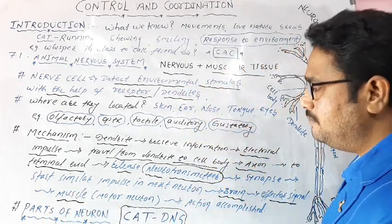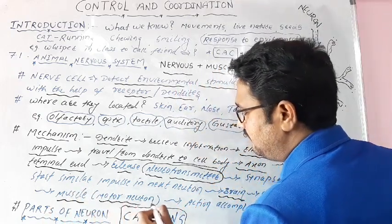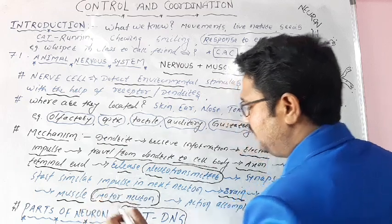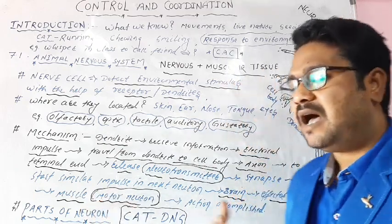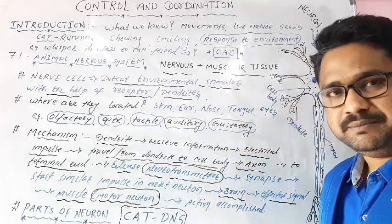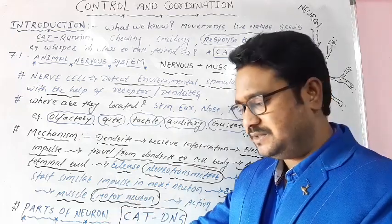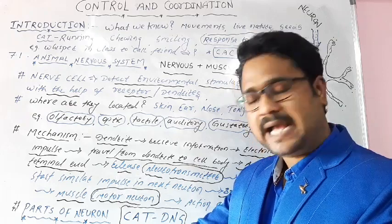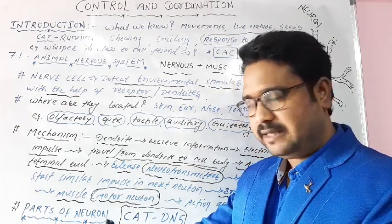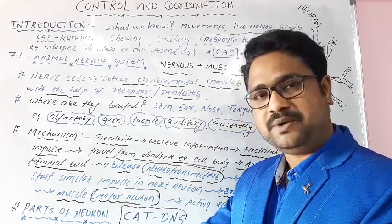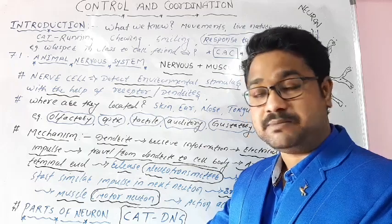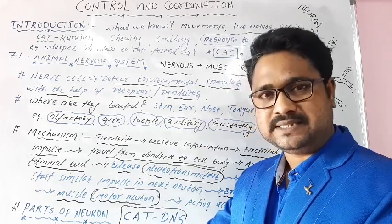An effector signal is sent to the muscles with the help of motor neurons - the neurons for muscular action are motor neurons. In this way, action is accomplished. For example, if I'm feeling this tactile response which is painful, I can feel that in my brain.